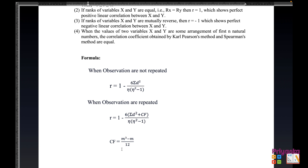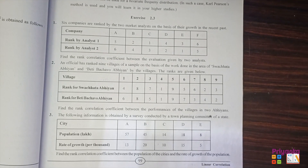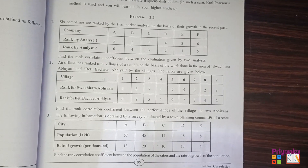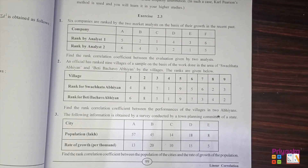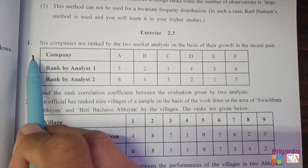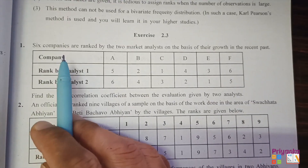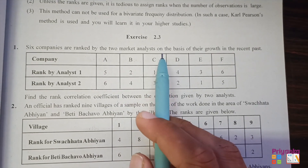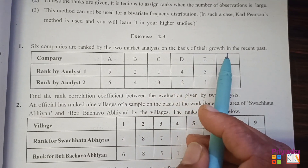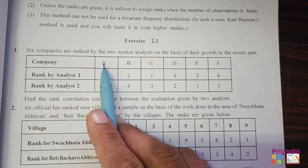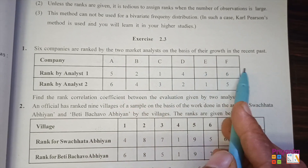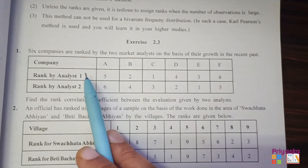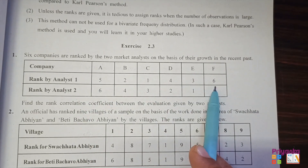The calculation and exercise 2.3 will now be covered. In exercise 2.3 we learn Spearman's rank correlation method. Starting with question one: six companies are ranked by two market analysts on the basis of their growth in the recent past. Six companies are given and ranks have been assigned as per their performance.